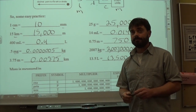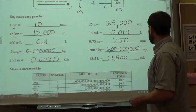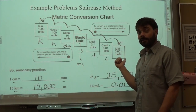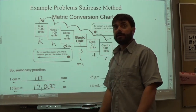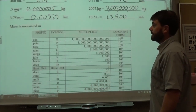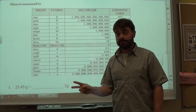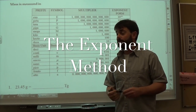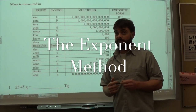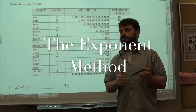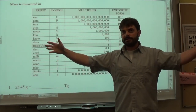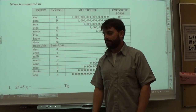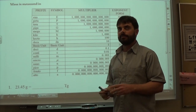The staircase method works all the way up to larger prefixes, but it gets cumbersome if you go up to terra or down to nano — 10 to the negative 9th — because the staircase gets really big and the numbers become extremely large or small. So I'm going to show you a second method using exponents: you subtract the exponents and write things in scientific notation, which is actually faster with less counting.